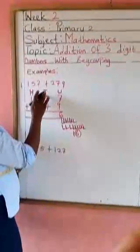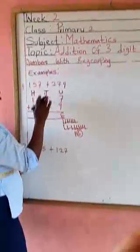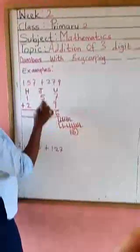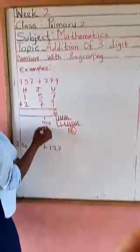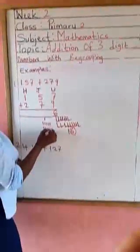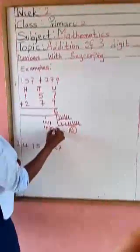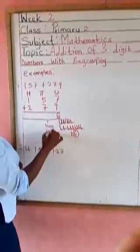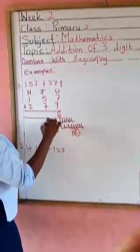So we have 1 plus 5 plus 7. Let's count 1: 1. Let's count 5: 1, 2, 3, 4, 5. Let's count 7: 1, 2, 3, 4, 5, 6, 7. Let's add together: 1, 2, 3, 4, 5, 6, 7, 8, 9, 10, 11, 12, 13.